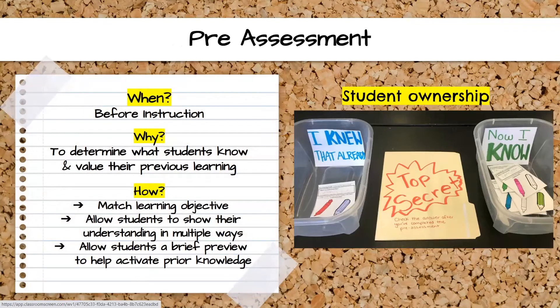Let's get started with pre-assessment — the things we do before instruction to determine what students already know and to value their previous learning. Our goal is to match the learning objective in our pre-assessment and to allow students to show their understanding in multiple ways. It also gives students a brief preview. Some students will need a little background knowledge activation before you start. Think about your classroom — do your students need a preview before the pre-assessment, or can they jump right in? What we really want to show students is that we value what they already know.